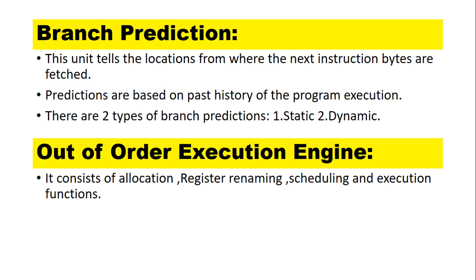Branch Prediction: This unit tells the locations from where the next instruction bytes are fetched. Predictions are based on the past history of program execution. There are two types of branch prediction: static and dynamic.